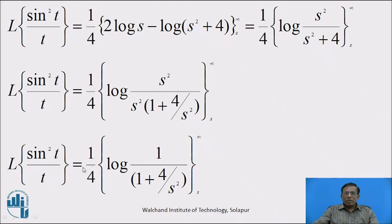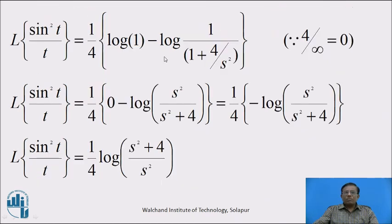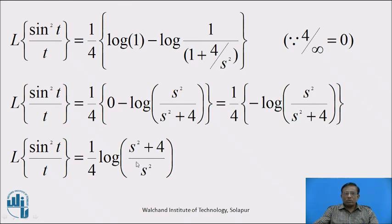Now s² cancels, so Laplace Transform of sin²(t)/t equals (1/4) × log[1/(1 + 4/s²)] with limit s to infinity. Substituting limits: when s equals upper limit infinity, using 4/∞ → 0, we get log 1. When s equals lower limit s, we get log[1/(1 + 4/s²)] = log[s²/(s² + 4)]. Therefore, the result is (1/4) × log[(s² + 4)/s²]. This is the required answer.